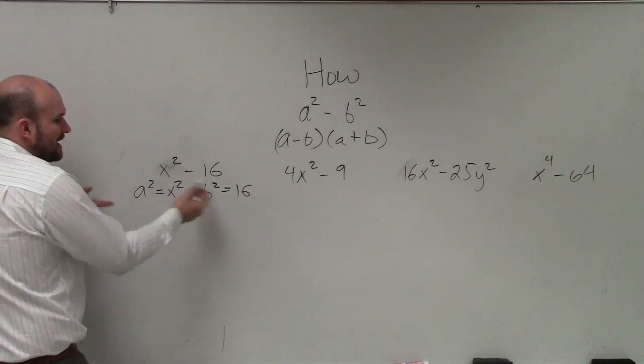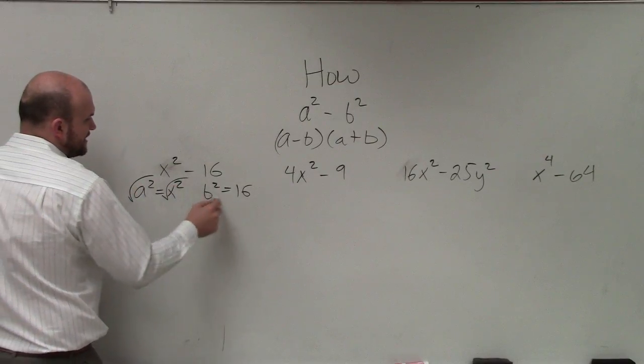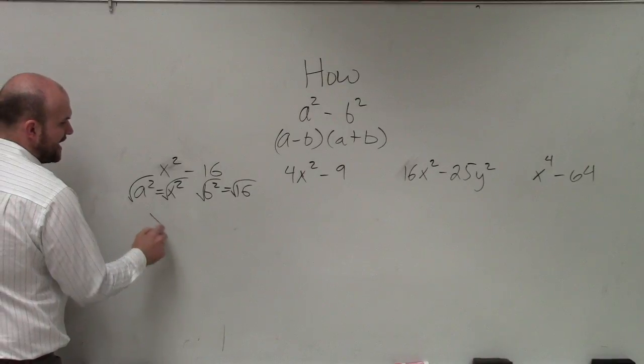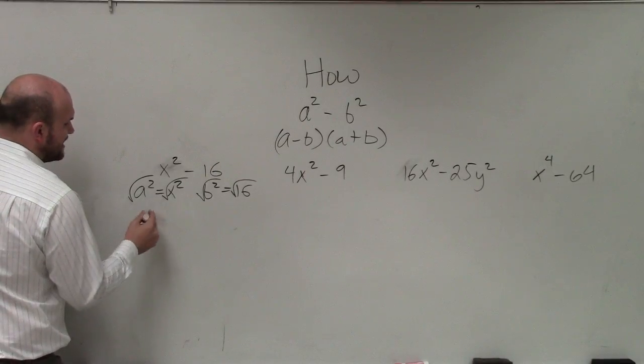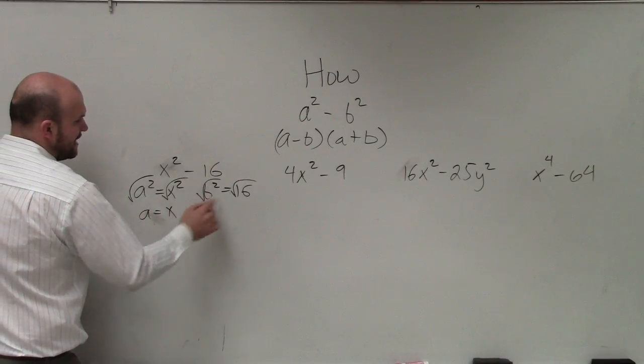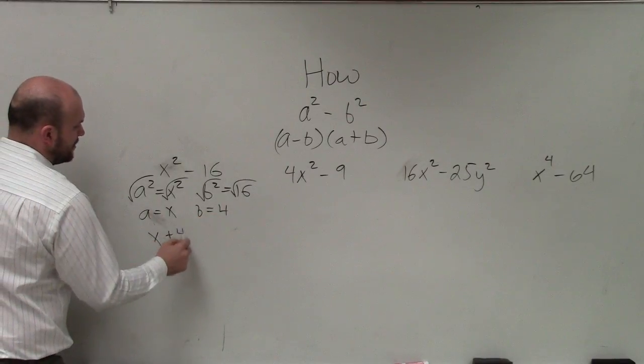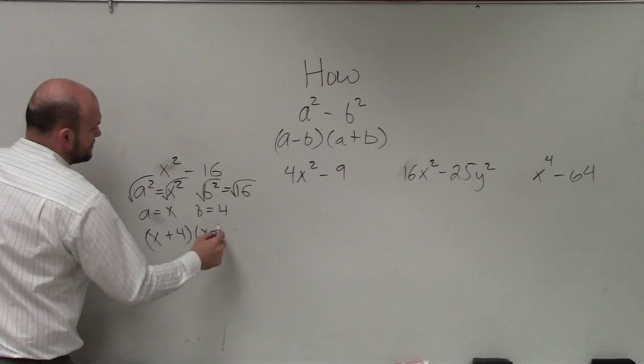What you want to do is identify what a and b are. To do that, you take the square root. The square root of x squared is just going to be x. Therefore, we can say a equals x, and b equals the square root of 16, which is 4. So therefore, I'd say x plus 4 times x minus 4.